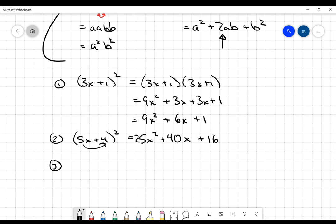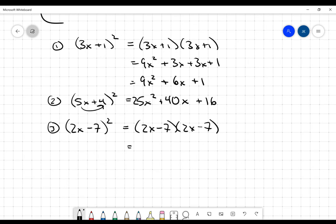If I throw a negative in there, let's say 2X minus 7 squared, I get the same sort of thing: 2X minus 7 times 2X minus 7. Distributing through, I get 4X squared minus 14X minus 14X plus 49. Those two middle terms combine to get negative 28X plus 49.